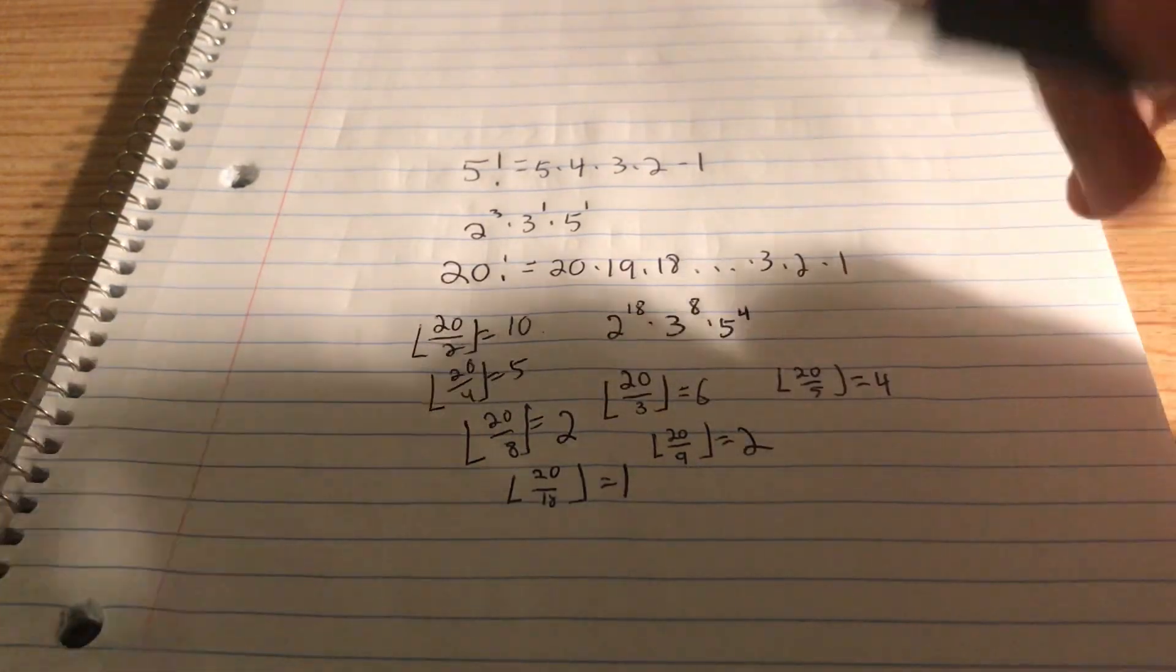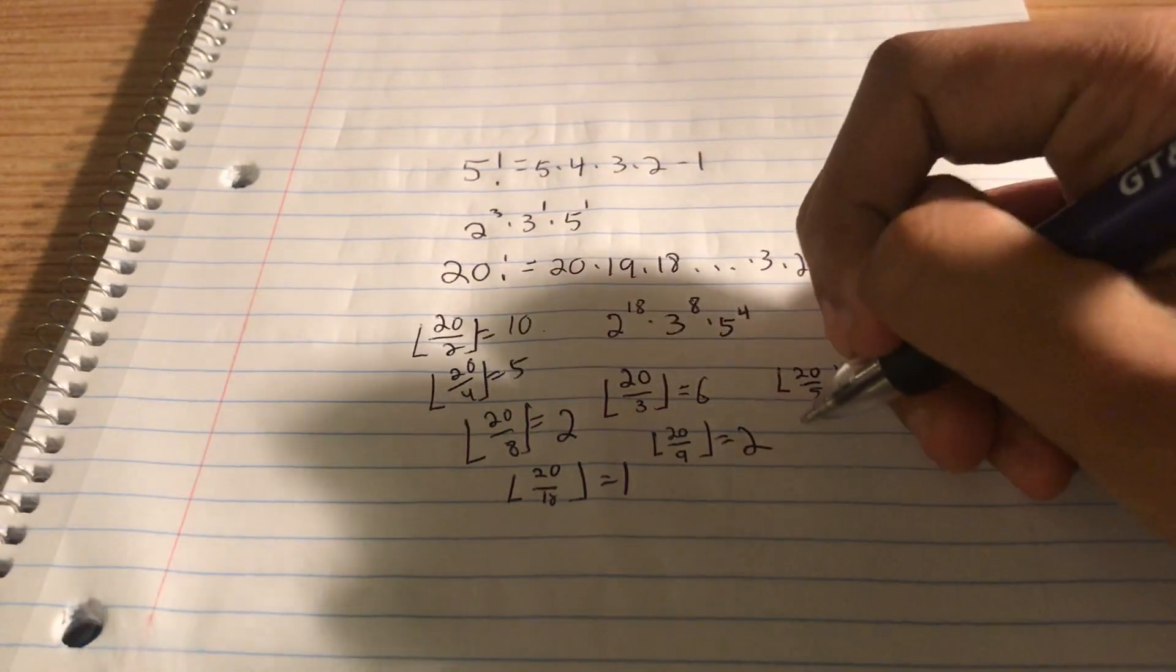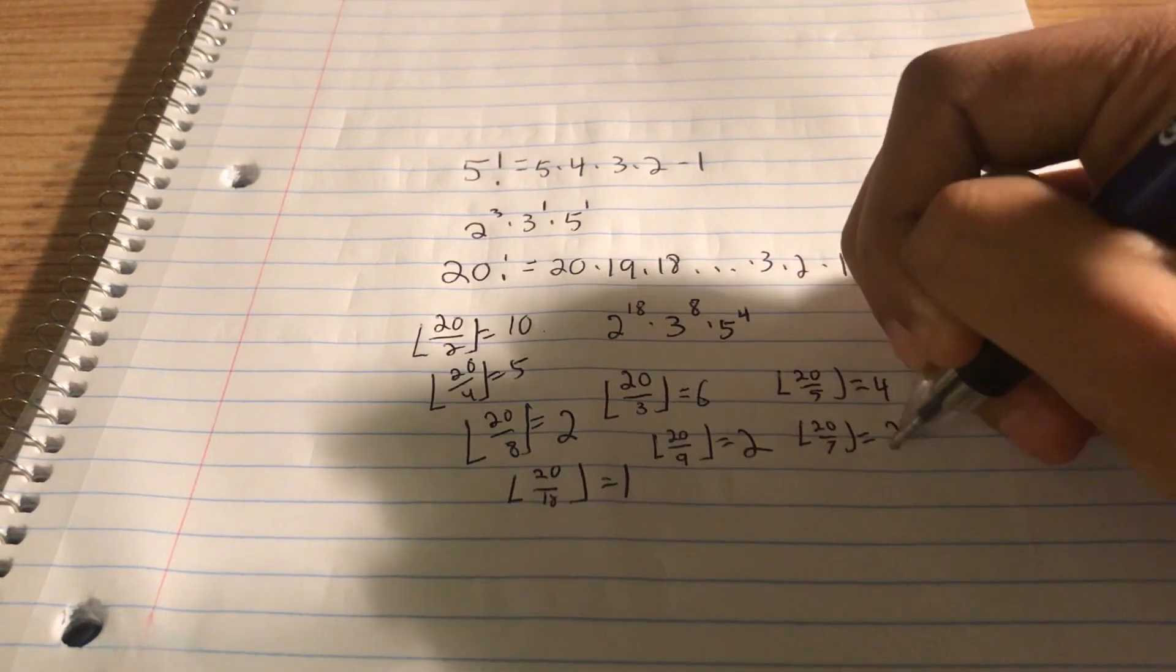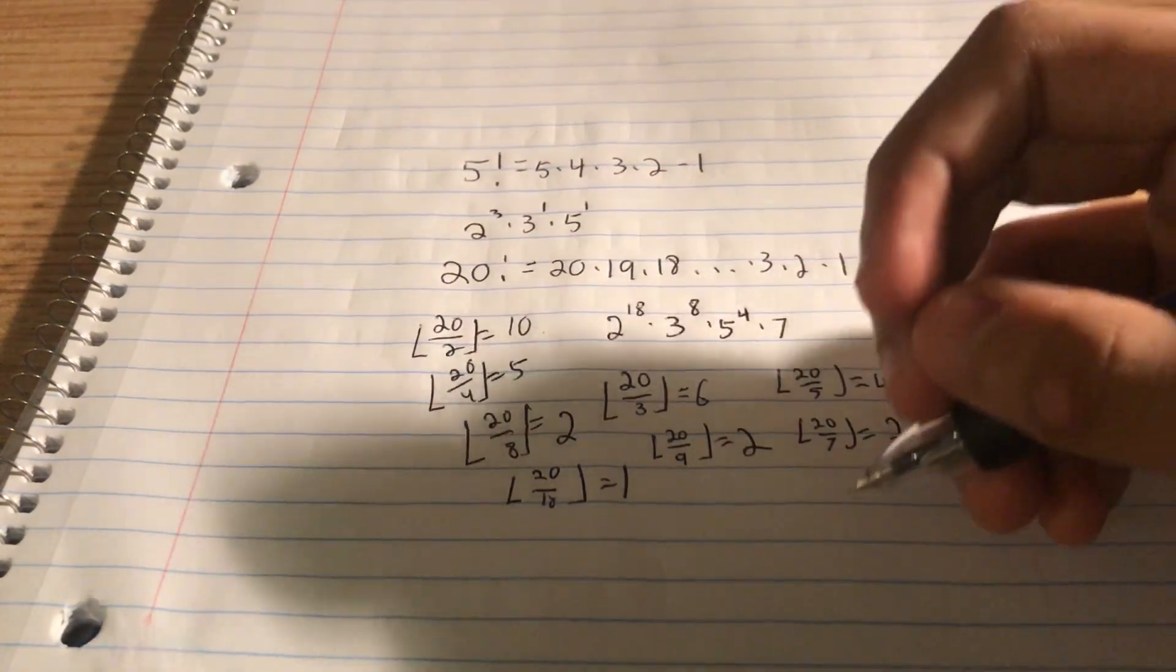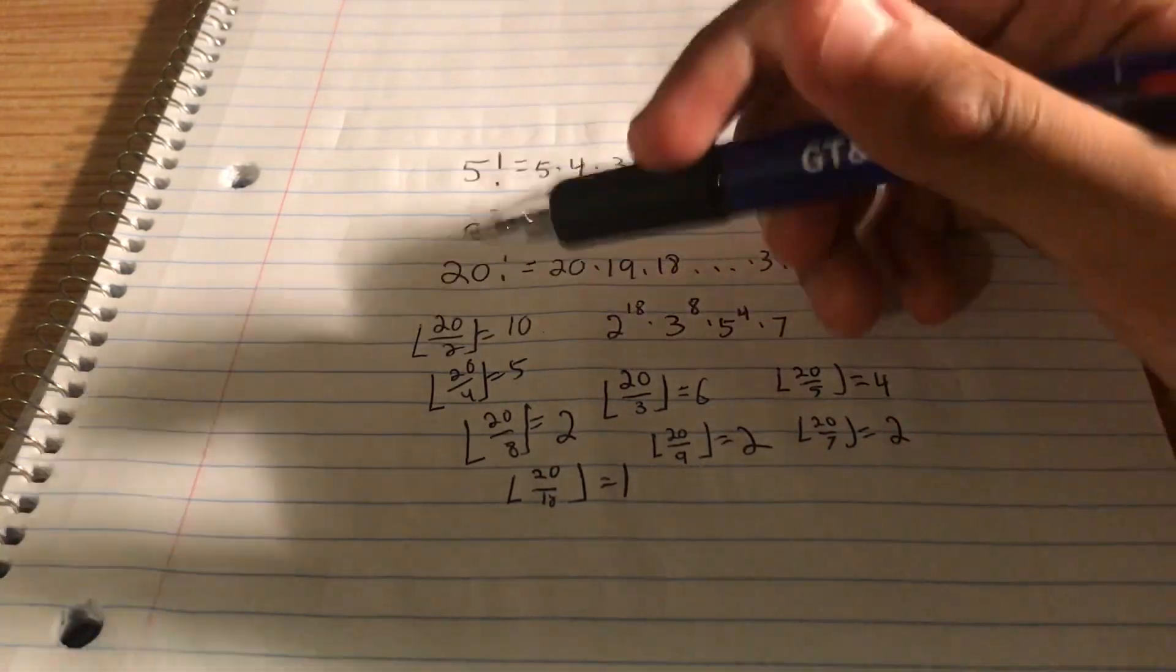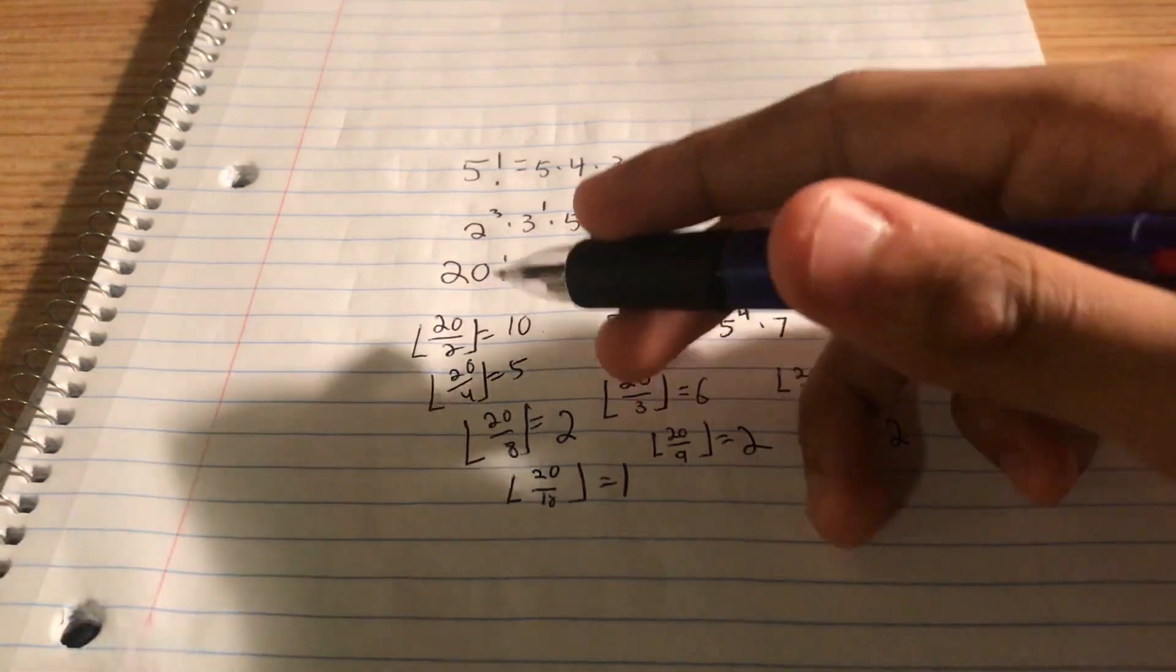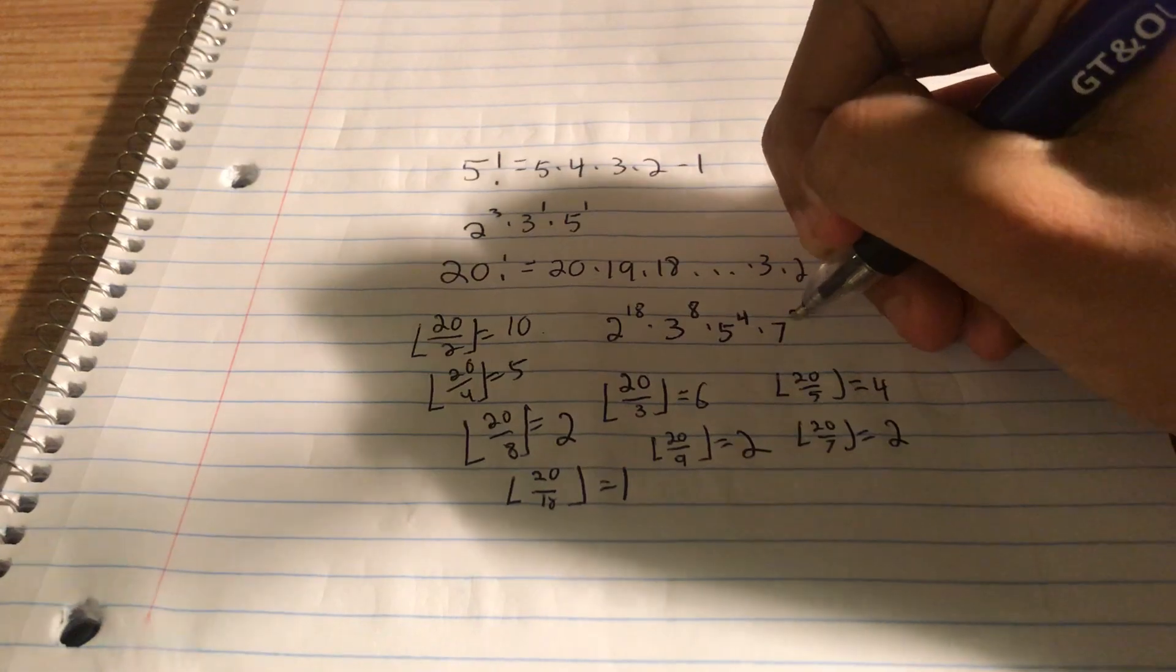The next prime is 7. 7, 14. And that's it. The floor of 20 divided by 7 is 2. So there are only 2 powers of 7. We don't have to go further because 7 squared is 49, which is already way bigger than 20. So it's not going to be anywhere near that proximity in which we're going to have another power of 7. So there's 7 squared.